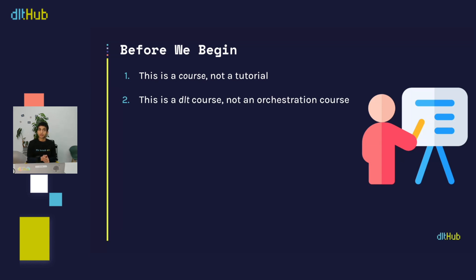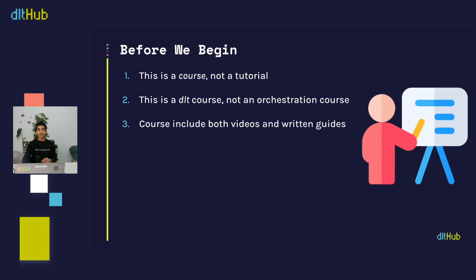Number two: this is a DLT course, not an orchestration course. This is an important distinction, because some of you are ready to learn about different orchestrators, which is great. But this course is made with the average DLT user in mind, so for each orchestrator we cover, we'll focus on tools and concepts needed for deploying DLT pipelines and nothing more. Finally, this course includes both videos and written guides in LearnWorlds. The videos give in-depth explanations of terminology, concepts, and deployment steps, while the written guides serve as quick references for commands and similar details.